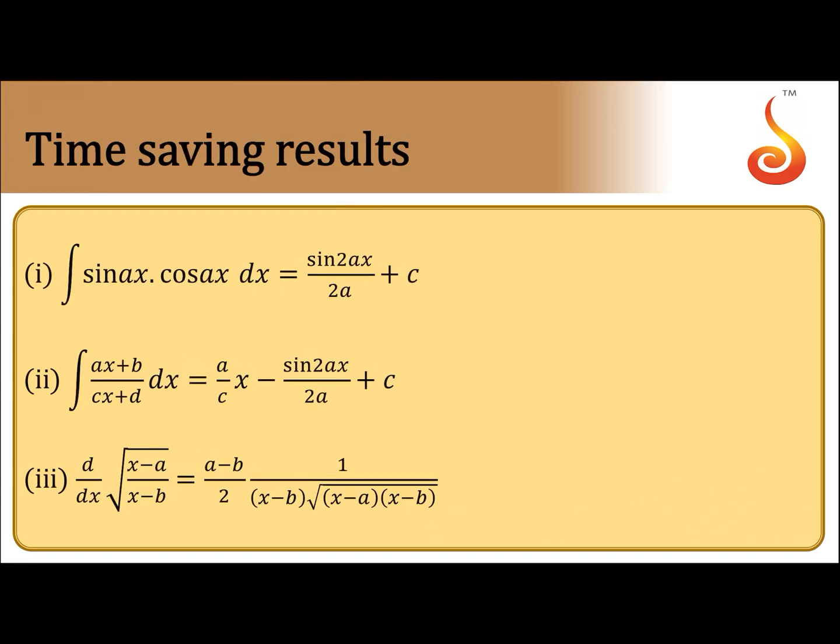There are certain standard results to remember: ∫e^x · [f(x) + f′(x)] dx = e^x · f(x) + constant. Also, ∫sin(ax)cos(ax) dx = sin(2ax)/(2a) plus constant.